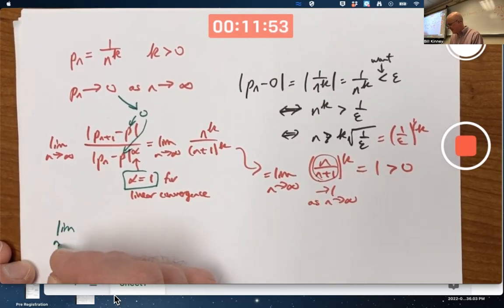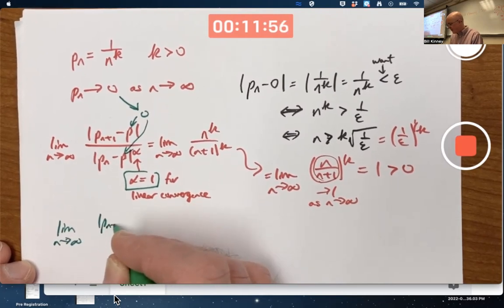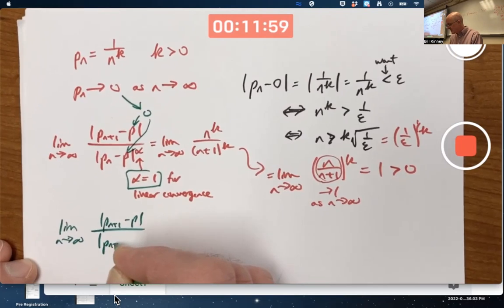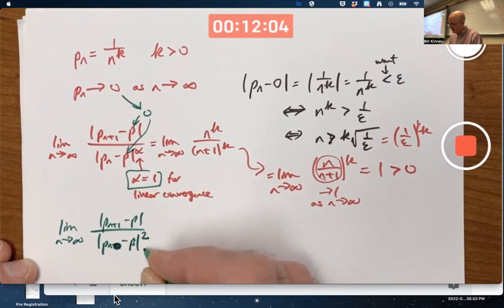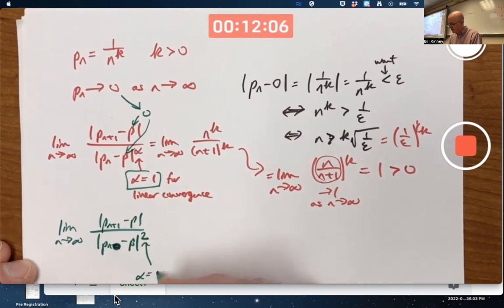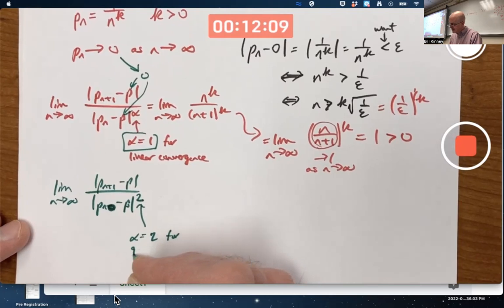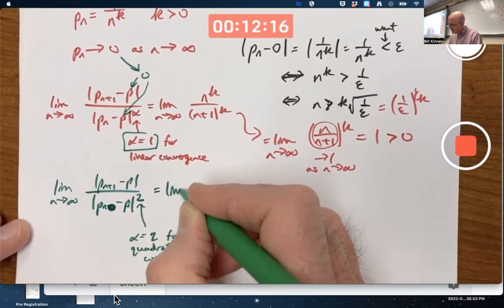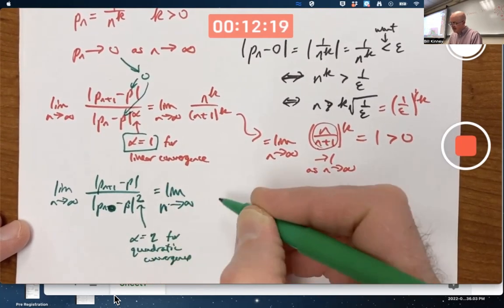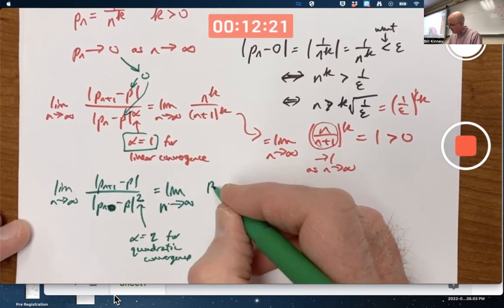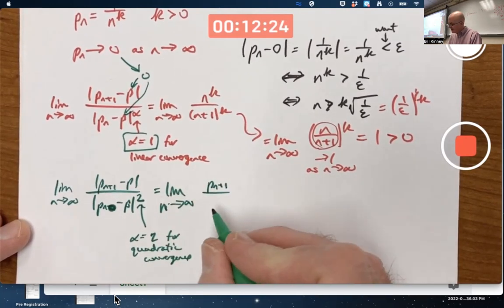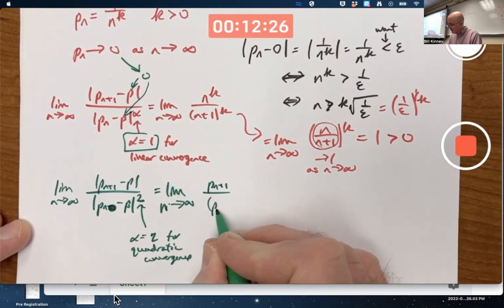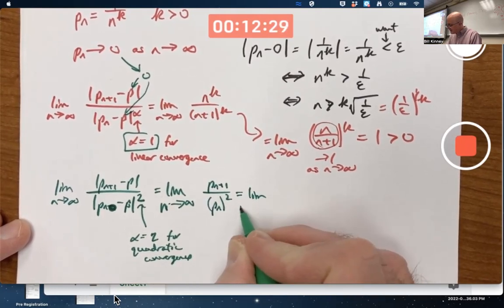If you computed the limit as n goes to infinity of pn plus 1 minus p over pn minus p in absolute value squared, alpha equals 2 for quadratic convergence. What would you get? This would be the limit as n goes to infinity of p sub n plus 1 over, ultimately again, p is 0 here. You'd get p sub n quantity squared.